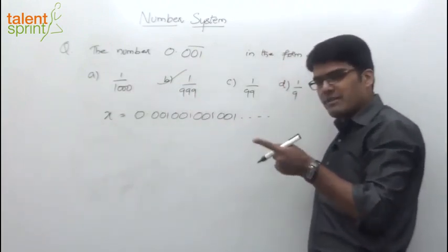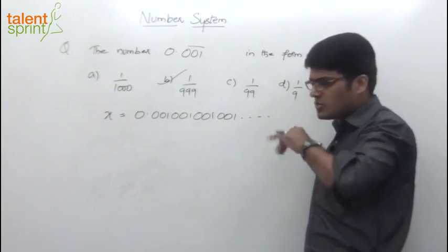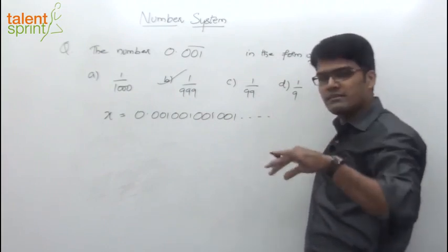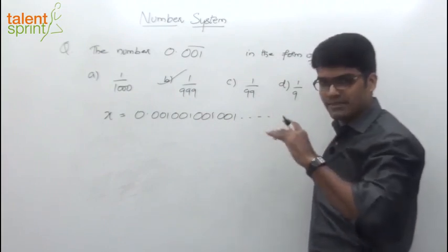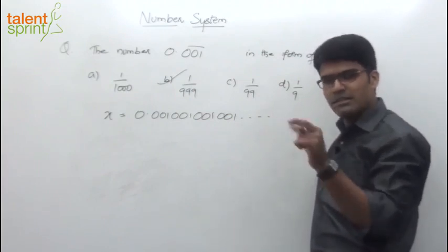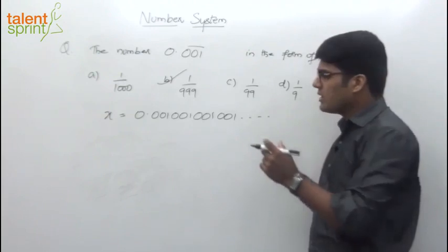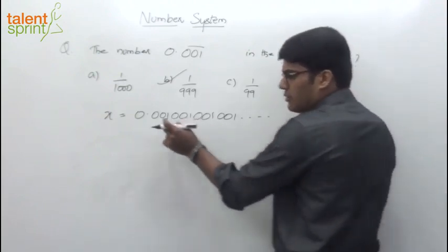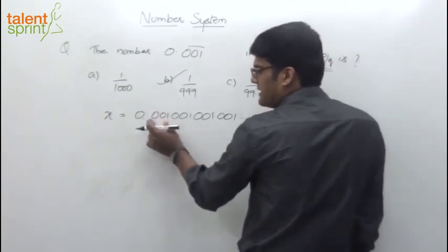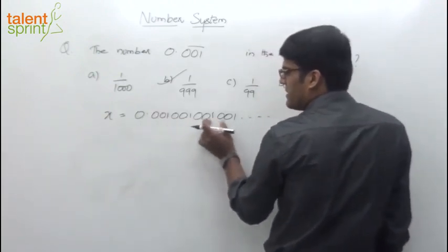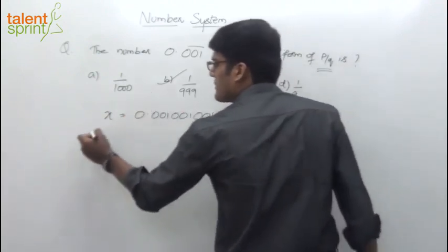What was the reason for multiplying by 100 previously? Only 2 digits were repeating: 1, 2, 1, 2, 1, 2. So I needed to bring one pair to the other side of the decimal. Here I will try to do the same thing — since 3 digits are repeating, multiply by 1000.